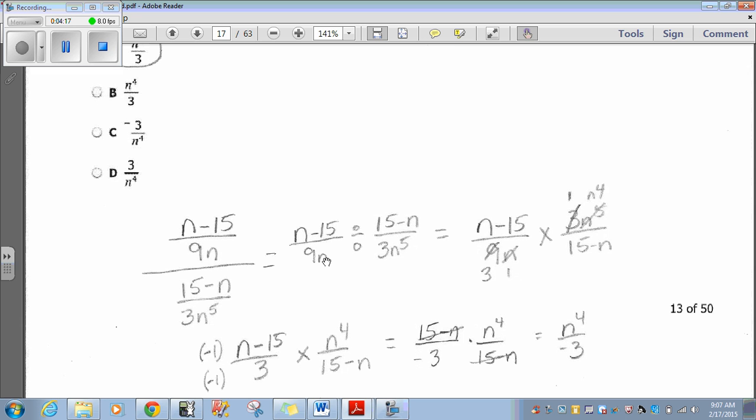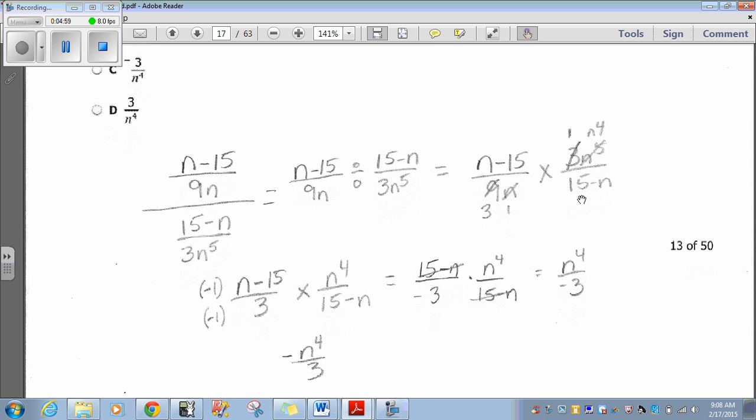And the way that you can answer this, here's our expression. Now, this is a division line. So, if I just turn the division line around like this, it's still n minus 15 over 9n divided by 15 minus n over 3n to the 5th. What do we do with division of fractions? We turn it to multiplication. And then, we flip the second fraction or take the reciprocal. So, that we have n minus 15 over 9n times 3n to the 5th over 15 minus n. Then, we could cancel out 3n to 9 here and then the n's. So that would give us simply n to the 4th here and then just simply 3 here.